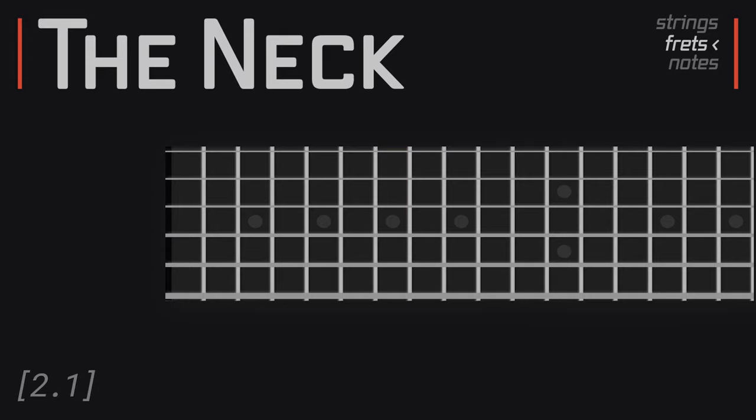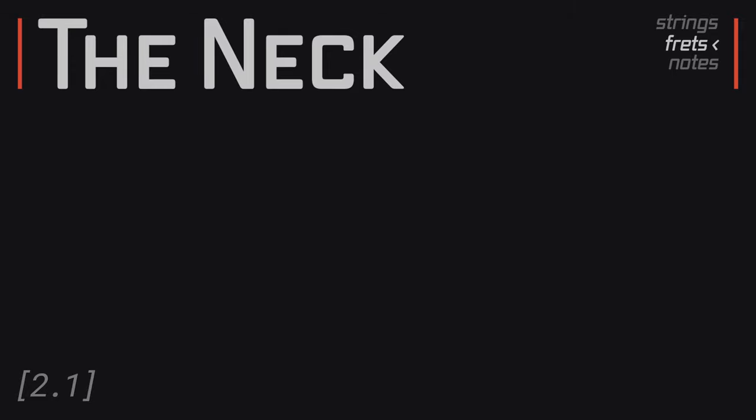Another physical element of the neck worth mentioning is the nut. Commonly made of bone or some other synthetic material, the nut is there to keep the string properly spaced, both vertically from the fretboard itself, but also from the other strings. Lots of guitars have different configurations when it comes to their necks and fretboards, but for the most part they tend to be almost entirely visual differences.